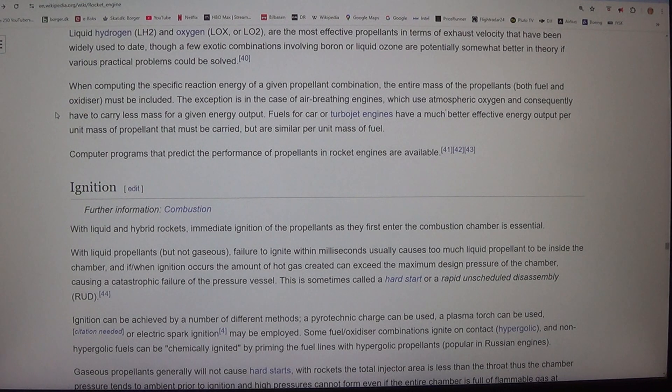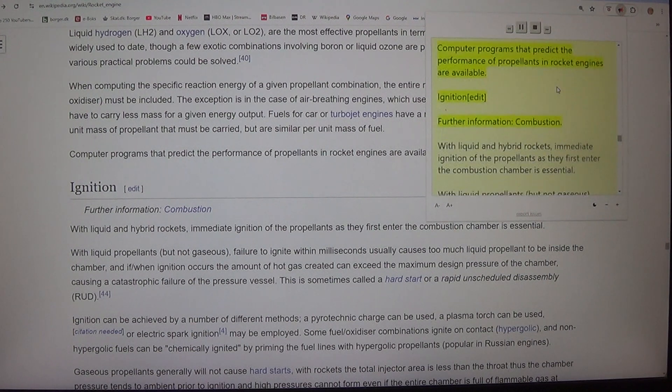The exception is in the case of air-breathing engines, which use atmospheric oxygen and consequently have to carry less mass for a given energy output. Fuels for car or turbojet engines have a much better effective energy output per unit mass of propellant that must be carried, but are similar per unit mass of fuel. Computer programs that predict the performance of propellants in rocket engines are available.